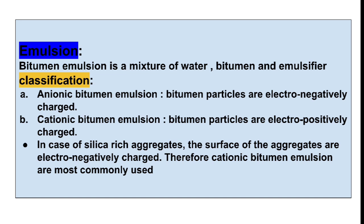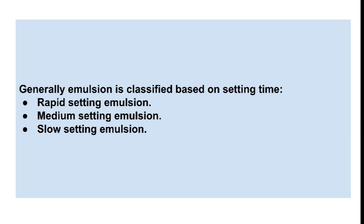Silica-rich aggregate has surfaces that are electronegatively charged. So cationic bitumen emulsion is mostly used when compared to anionic bitumen emulsion, due to the silica charge.